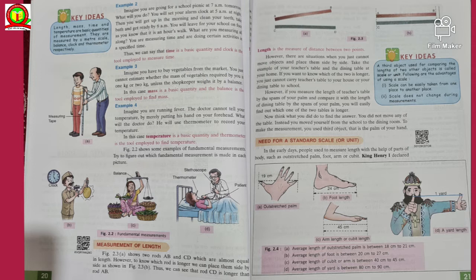Now think that to find the answer you did not move any of the tables. Instead you moved yourself from the school to the dining room to make a measurement. You used a third object, that is the palm of your hand. In the earlier days people used to measure length with the help of parts of body such as outstretched palm, foot, arm, or cubit. See it has been clear from the diagrams that are given.